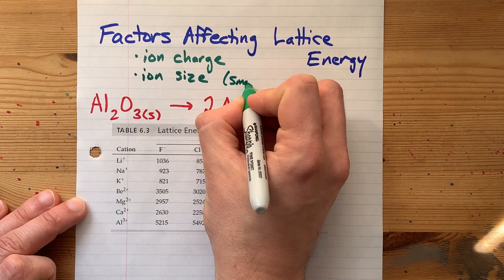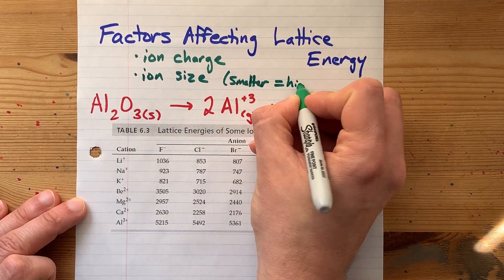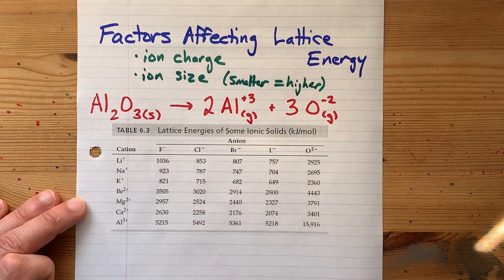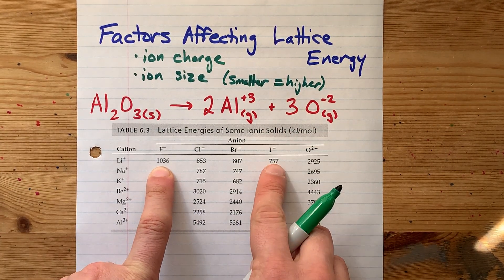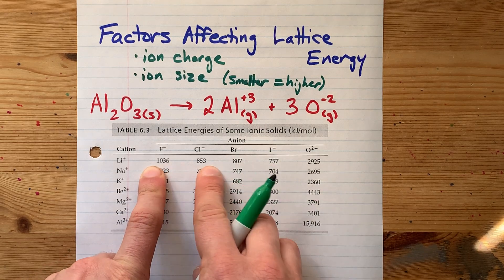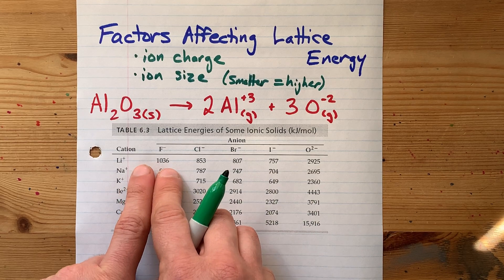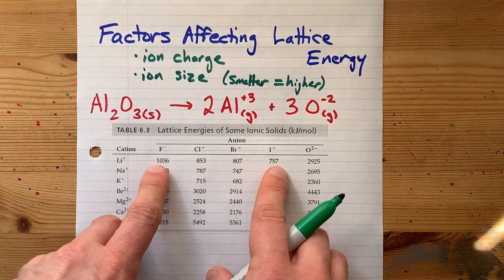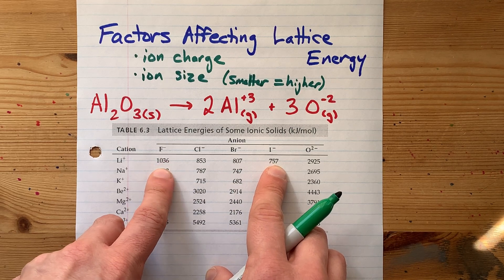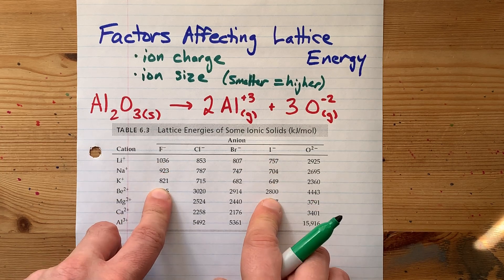Smaller ions have a higher lattice energy. The trend here is that fluoride is way smaller than iodide, and that continues through the halogens — smallest, next smallest, kind of big, biggest. You'll notice that the highest value in that row happens to correspond to the smallest ion with that charge, of course.